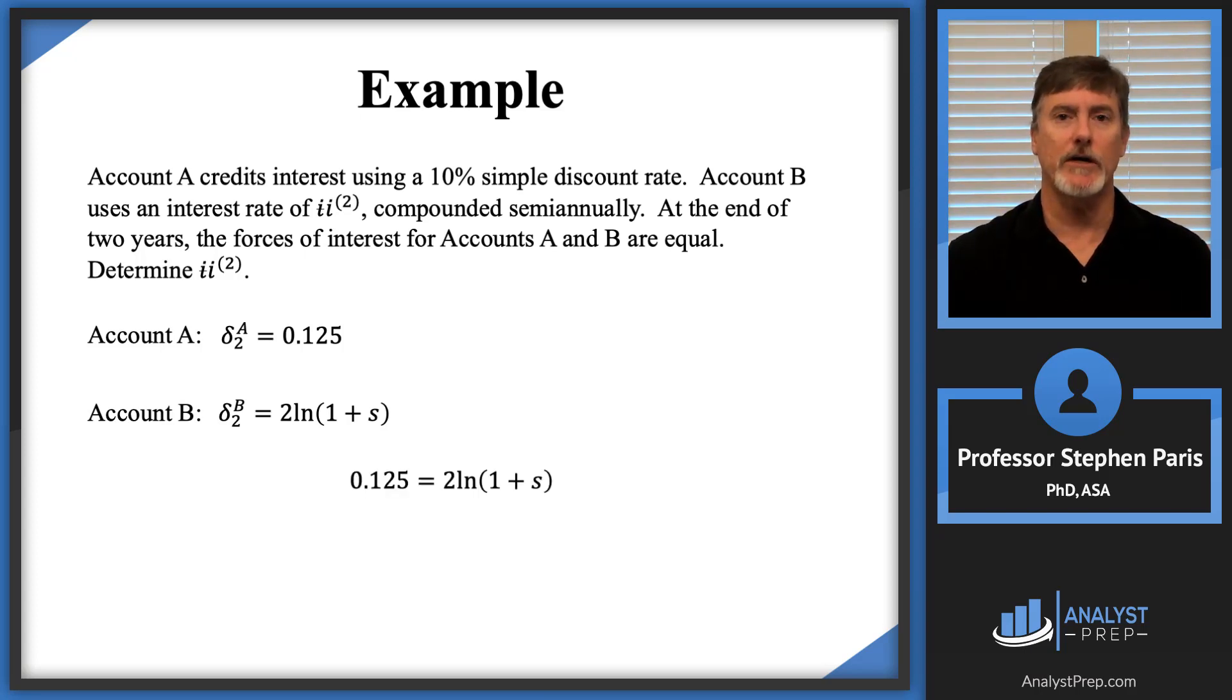And now technically I'm asked to find the value of I upper 2. I've got an equation that has S. But remember S being the semi-annual effective interest rate is the I upper 2 divided by 2. So I can rewrite the equation with the unknown being an I upper 2 and now solve for I upper 2.